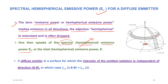When we say 'spectral,' it means its dependence on lambda, which is why we write e_lambda. We can also take the total emissive power e, or total hemispherical emissive power e — here again, 'hemispherical' is kept in brackets because it is redundant. So whether we call it the total emissive power or simply the emissive power, it is one and the same thing.